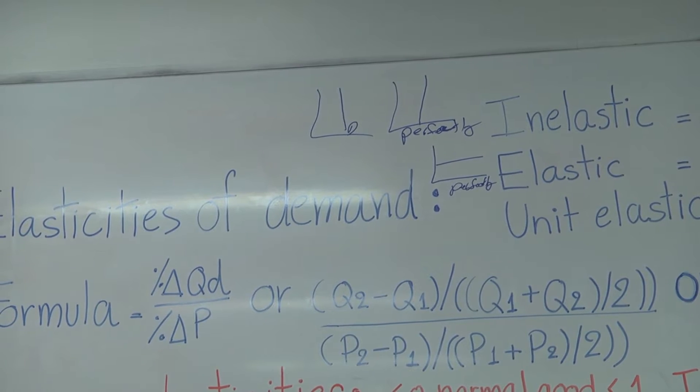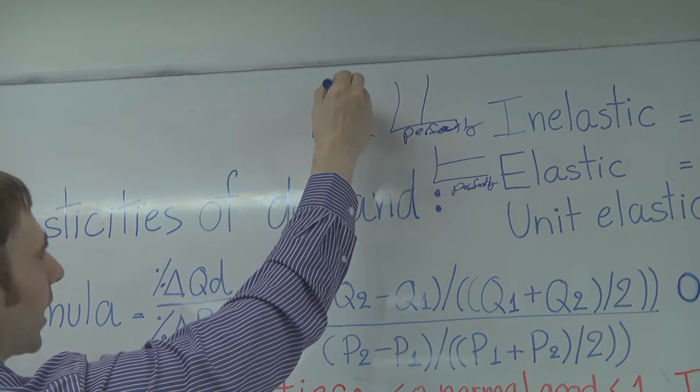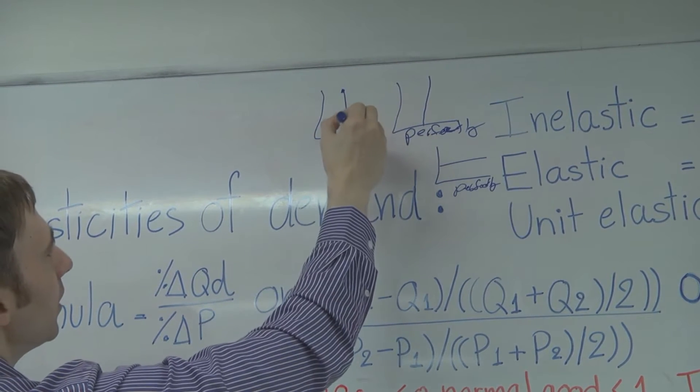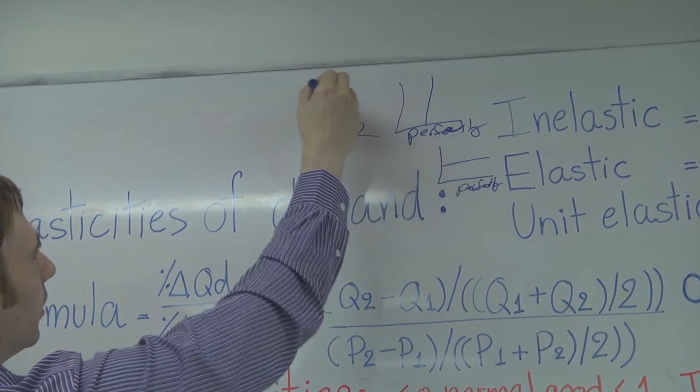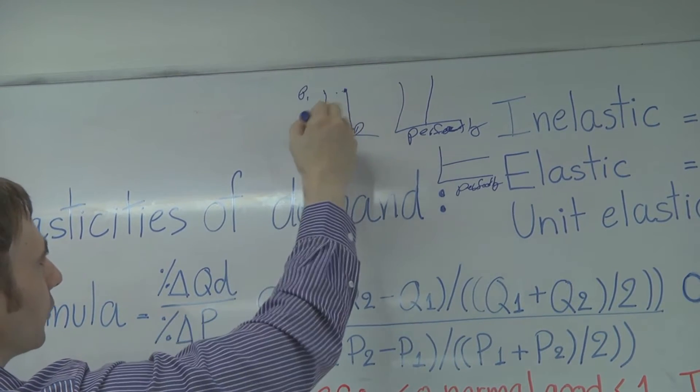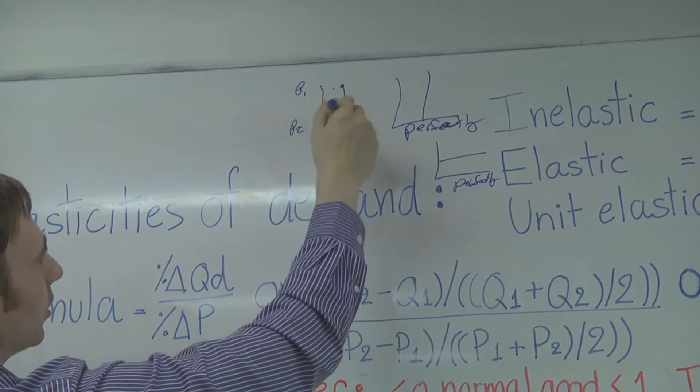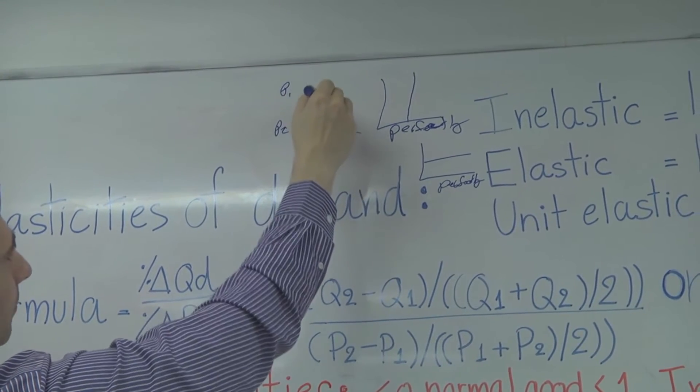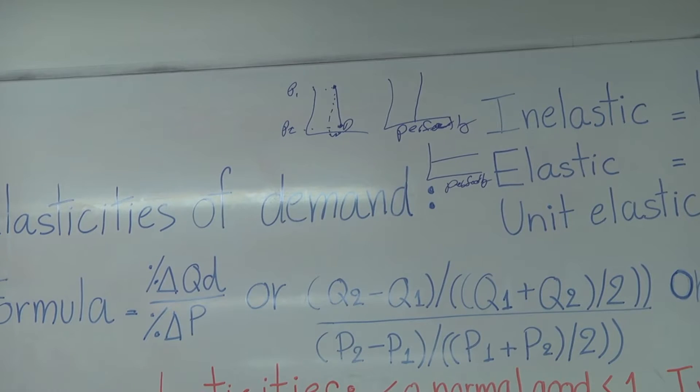My demand curve would look something like that. That's highly, highly inelastic. So what it means is I could change my price from here to here. We could have huge price changes, but the demand changed ever so slightly.